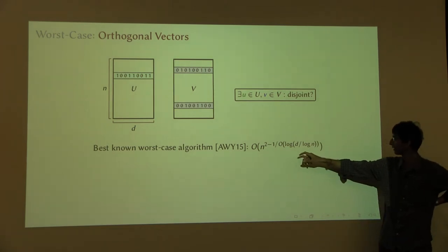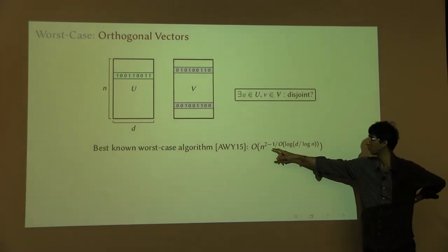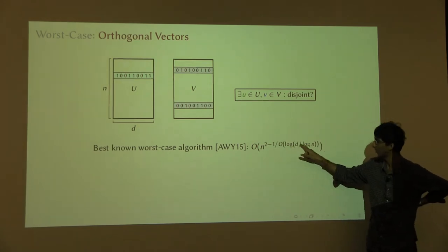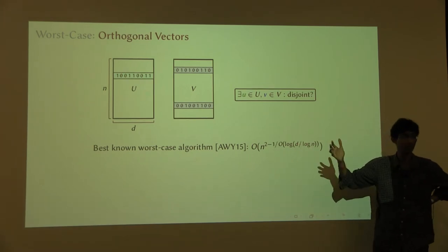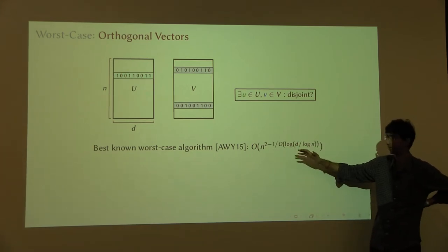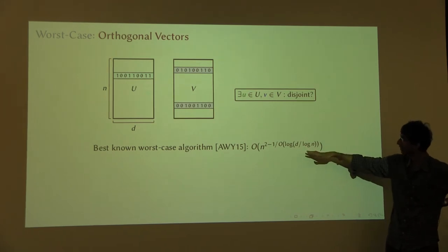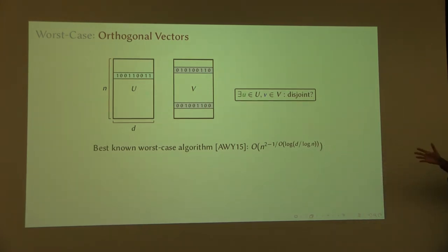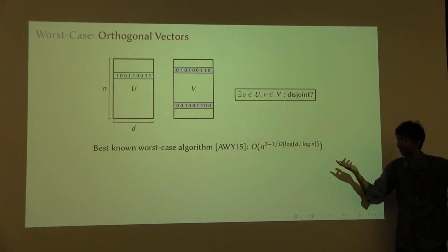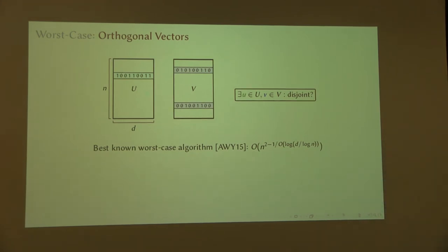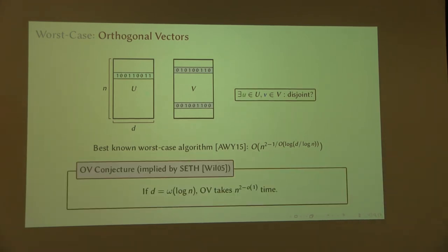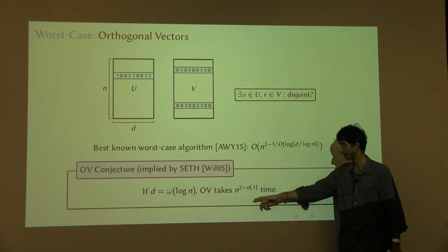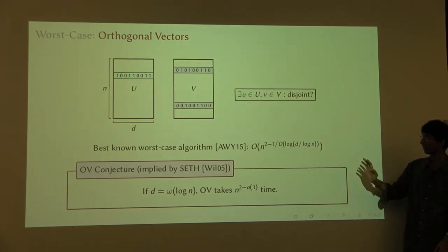For example, if D is some constant times log n, then the exponent is 2 minus some constant. But if D is log-squared n, then this is 2 minus 1 over log log n, which is more than 2 minus any constant — it's more than 1.999. So if D is strictly more than log n, then this is still almost quadratic. This is the best algorithm we know. The standing conjecture after decades of work is that this is the best you can do — that if D is a lot more than log n, it actually takes n to the 2 minus little-o of 1 time.